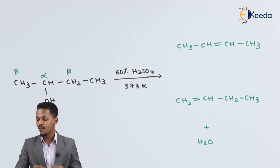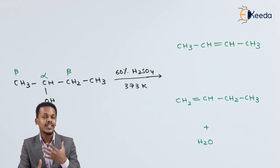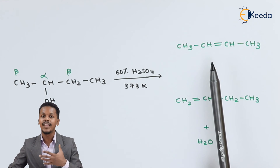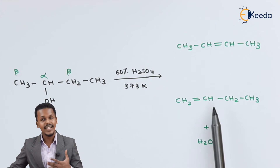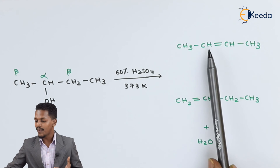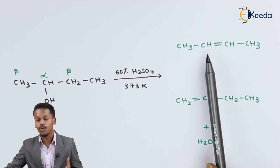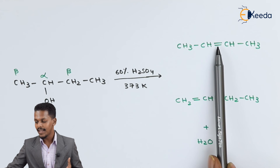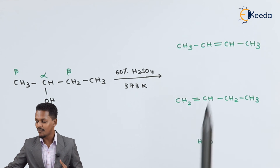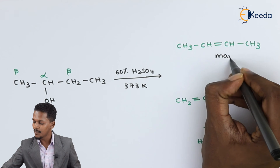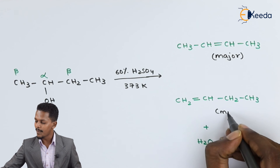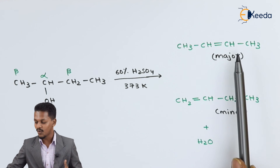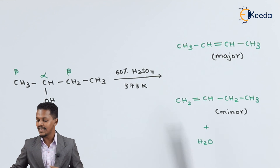Which one is the major product? This is related to Zaitsev's rule: when dehydration or dehydrogenation gives two possible products, the major product is the one where the double bond has more alkyl groups attached to it. Here, one product has only one alkyl group on the double bond, while the other has two methyl groups — so that is the major product, which is but-2-ene. The other is the minor product, but-1-ene.